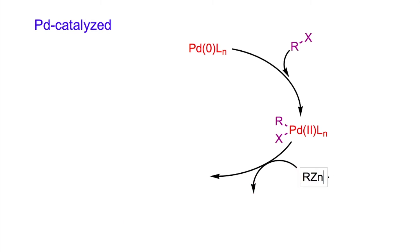Then, the organozinc reagent exchanges its organic substituent with the halide in the palladium II complex, generating a zinc halide during the transmetallation step.